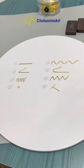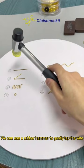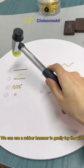Finally, check if all the gold wires are securely attached. We can use a rubber hammer to gently tap the wire. Hope this video is helpful to you. With practice, you can quickly master filigree techniques.